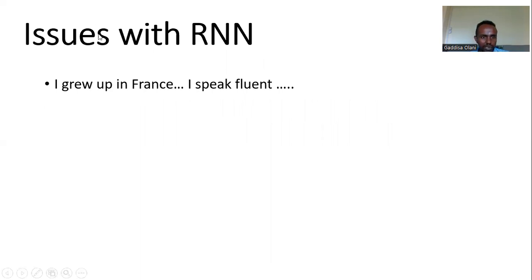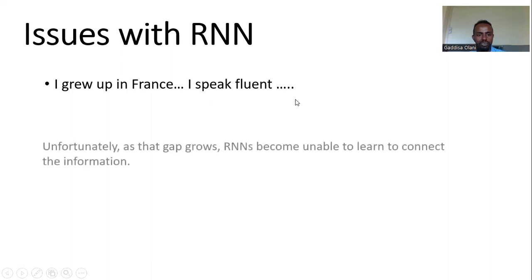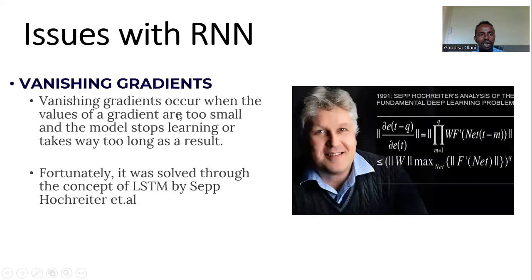For example, given a sentence: 'I grew up in France. I speak fluent...' — the expected output is 'French.' The model needs to consider the full context. If you say 'I grew up in France' versus 'I mostly live in Kenya,' the context changes. When past context is too far back, the gradient can vanish — that is called the vanishing gradient problem.